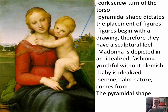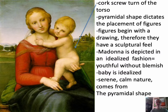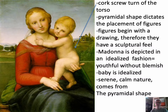Here you see the corkscrew turn of the torso and a pyramidal shape that dictates the placement of the figures. The figures always begin with a drawing, and so because of that they tend to have a sculpted feel. The Madonna here is depicted in an idealized fashion — she's youthful, has no blemishes, light rosy cheeks, a little bit of an olive undertone. The baby is idealized as well and has a sense of serenity and calmness.